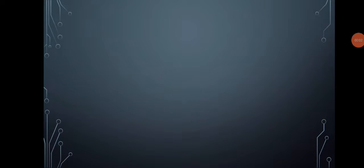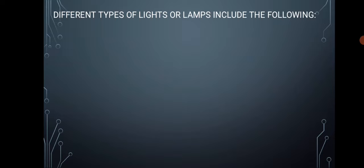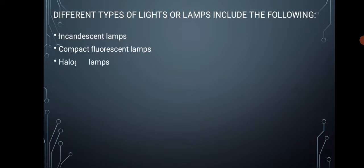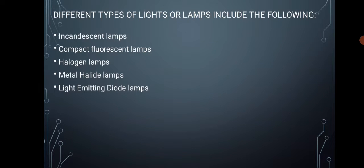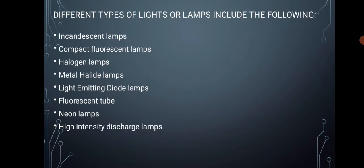The different types of lights or lamps include the following: incandescent lamps, compact fluorescent lamps, halogen lamps, metal halide lamps, light emitting diode, fluorescent tube, neon lamps, high intensity discharge lamps, and low pressure sodium lamps.